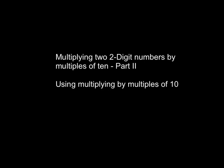Once again, we're multiplying two two-digit numbers using multiples of 10. But instead of using arrays, this time we are simply going to be multiplying by multiples of 10 — that same rule that we used a few lessons ago.